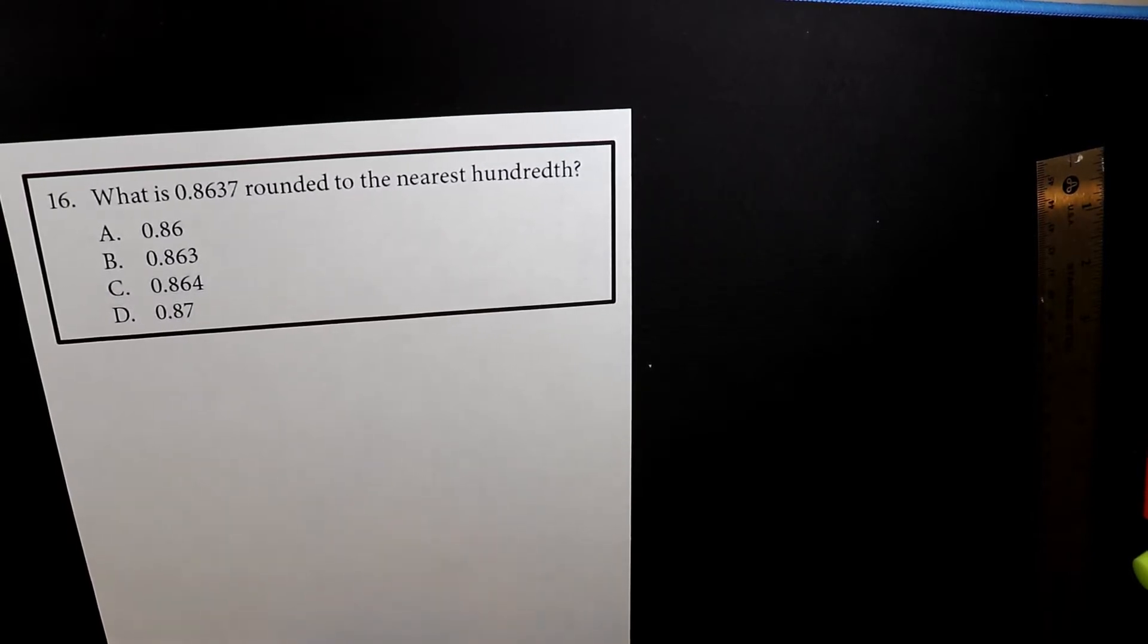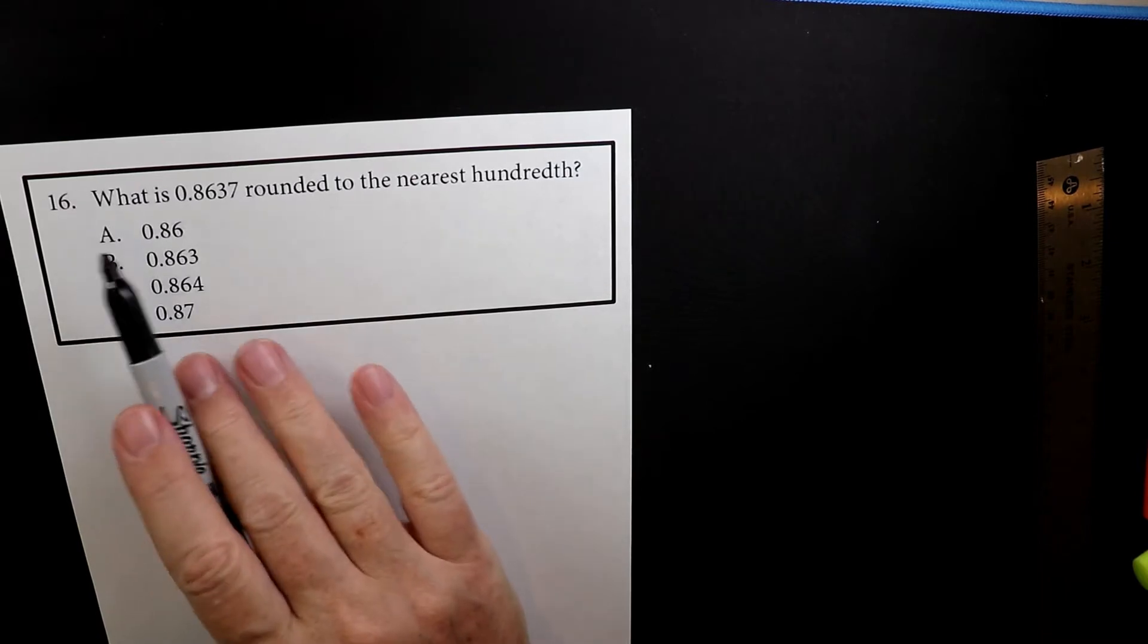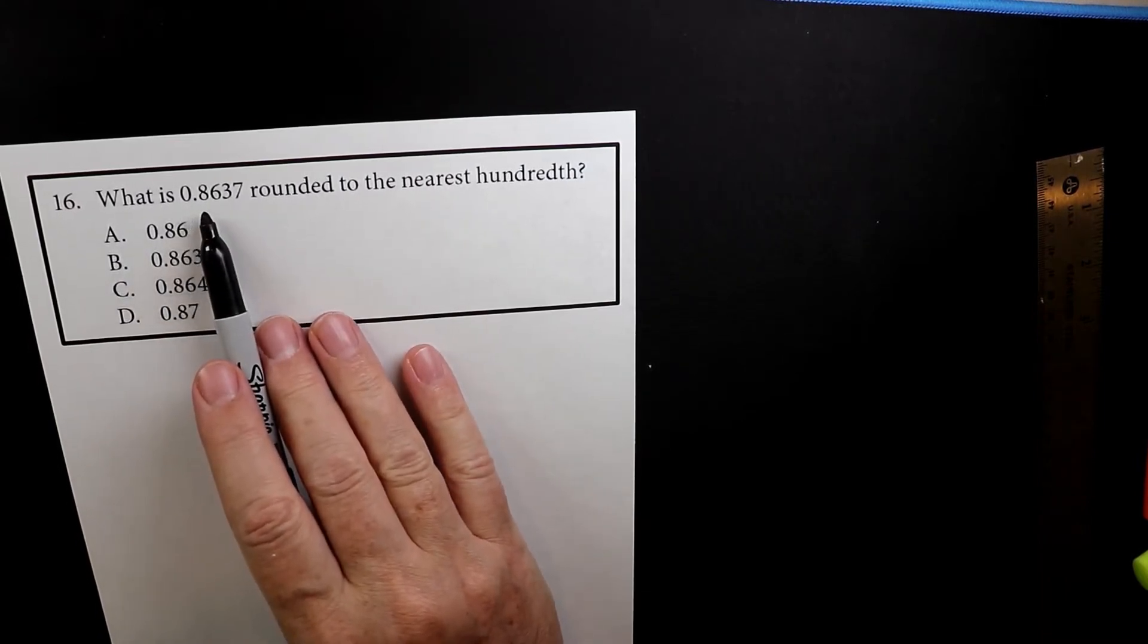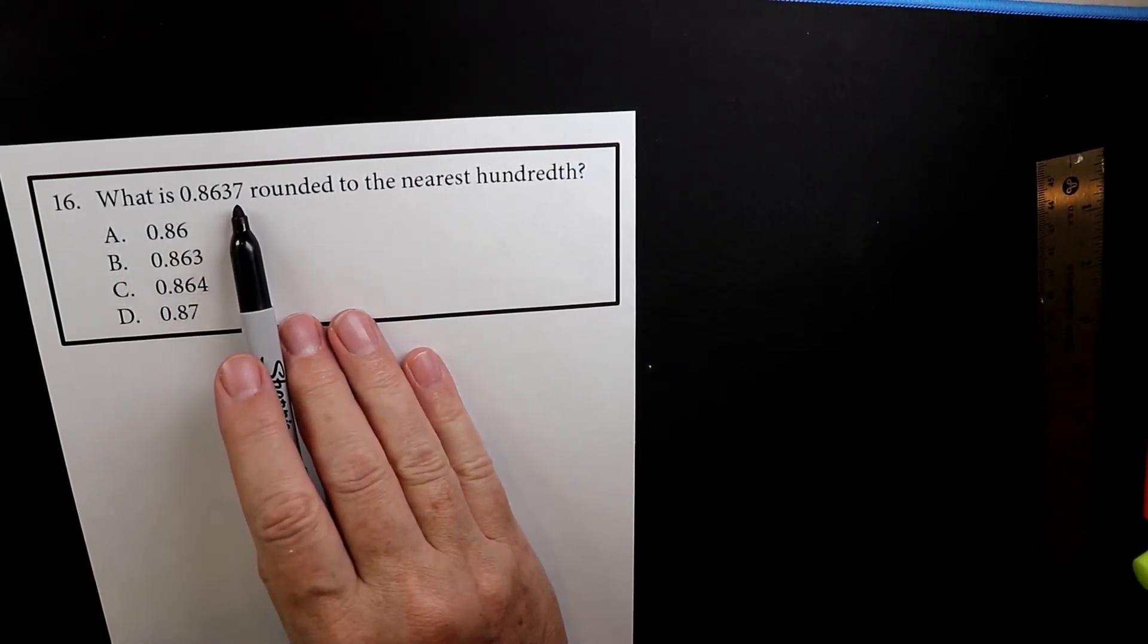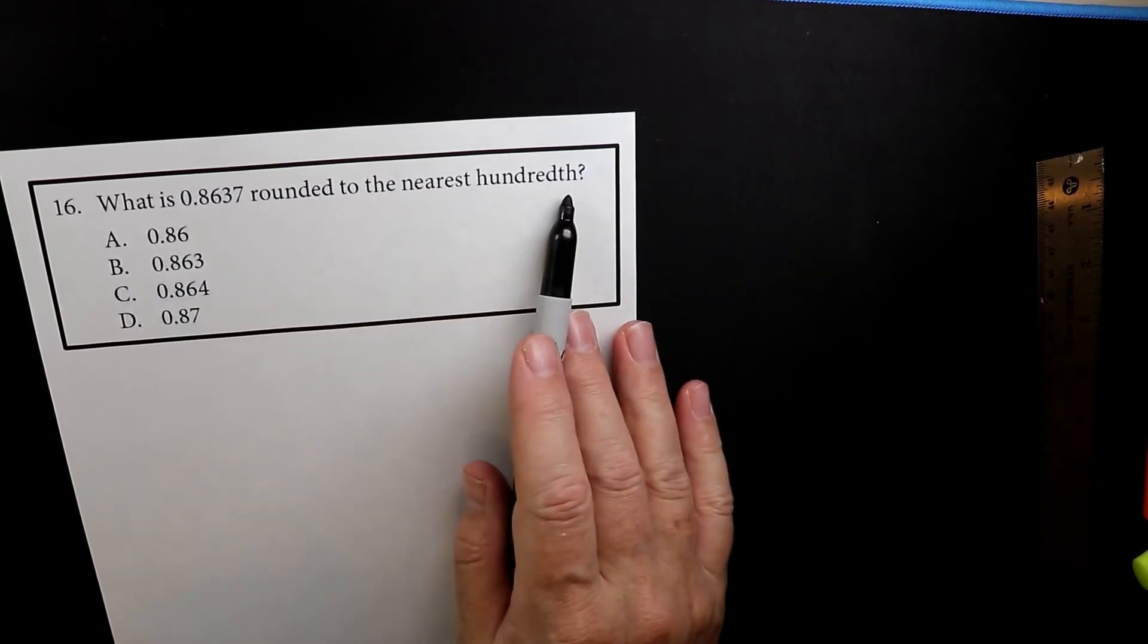So this is a rounding problem. This is number 16. What is 0.8637 rounded to the nearest hundredths?